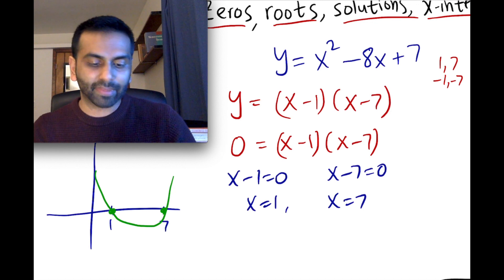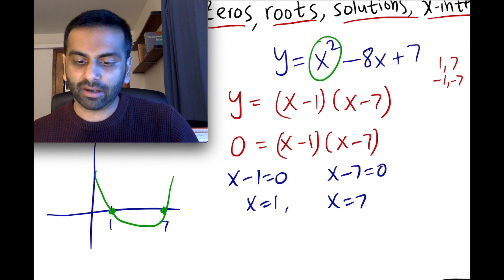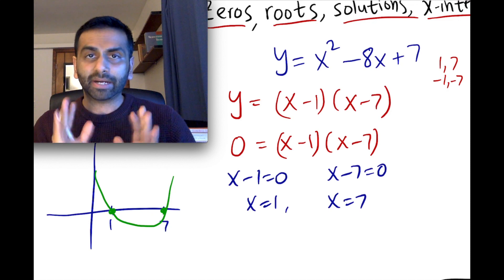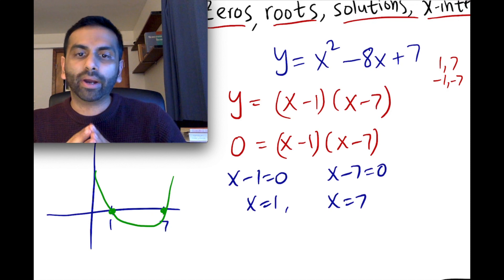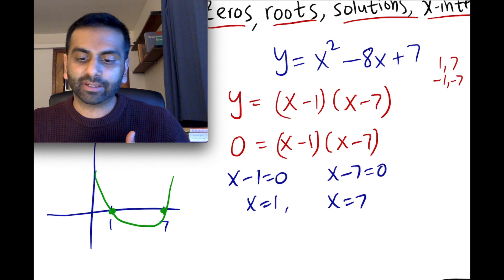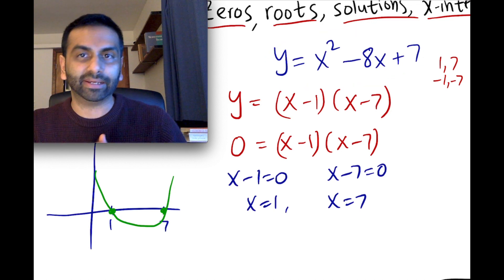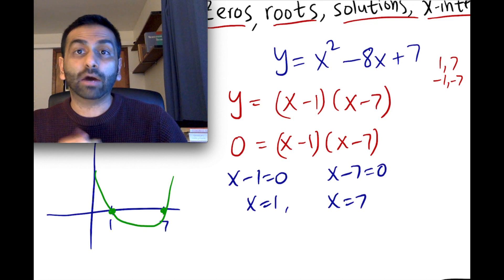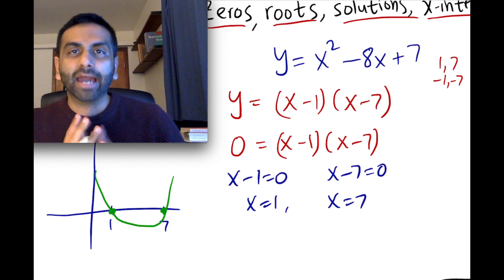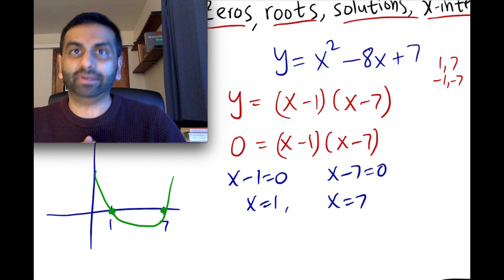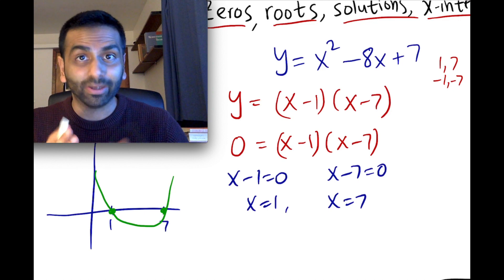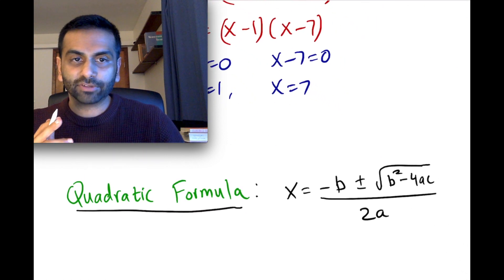We also know it's upward opening because there's a positive number in front of the x squared — just a positive 1. If it were negative, it would open downward. Now, what about cases when you cannot factor a quadratic equation? If you can't factor it, this process for finding the roots won't work. Whenever you're stuck with that, you can use the quadratic formula.